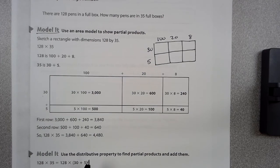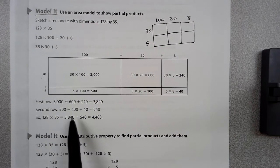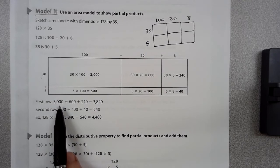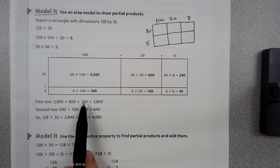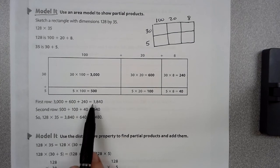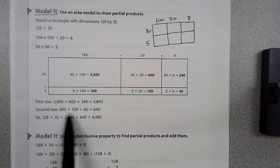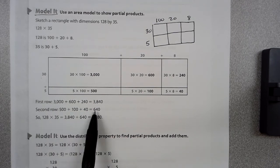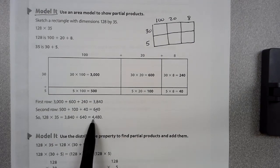Now what we do is we add the partial products. The first row together, you have 3,000 plus 600 plus 240 equals 3,840. Your second row is 500 plus 100 plus 40, which equals 640. Then you just add those together, and you get 4,480.